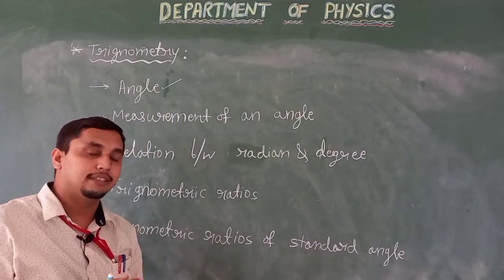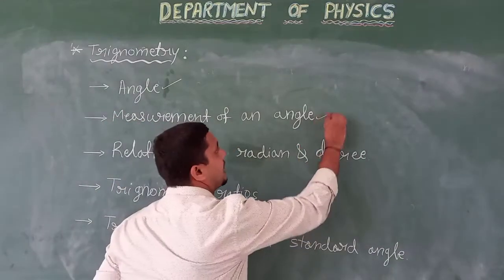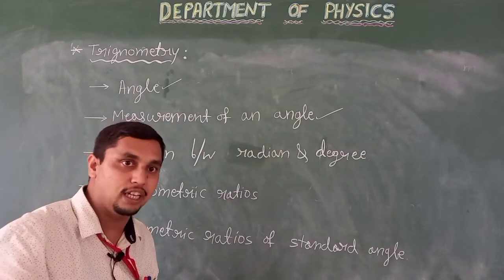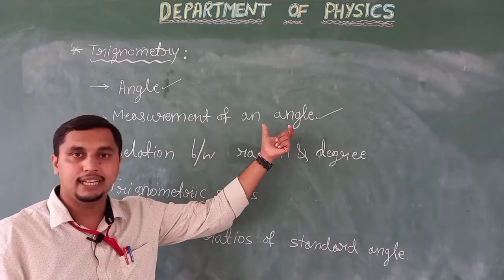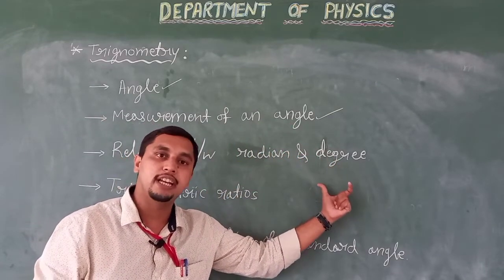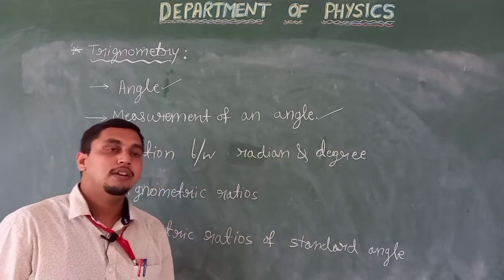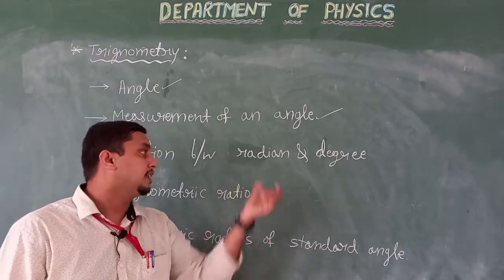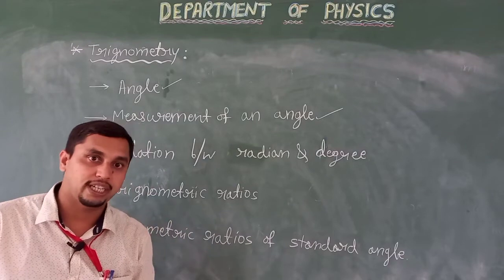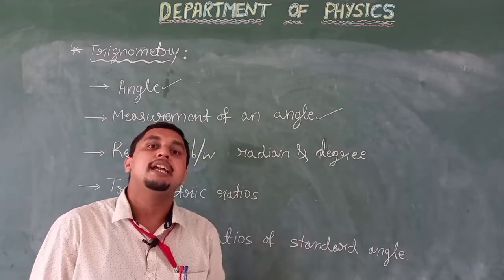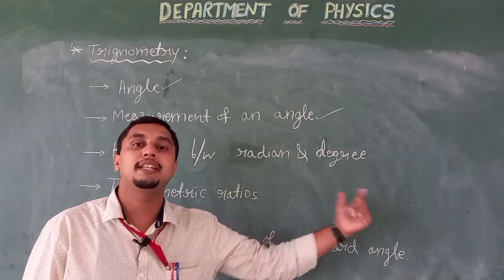We will see, one by one: angle — how to calculate and take the angle — and measurement of an angle, how to measure the angle. We will also see the relation between radian and degree. When you measure an angle, you measure it in terms of degree or radian, and conversion from one system of units to another is very important. Knowing the relation between radian and degree makes it easy to convert between the two.